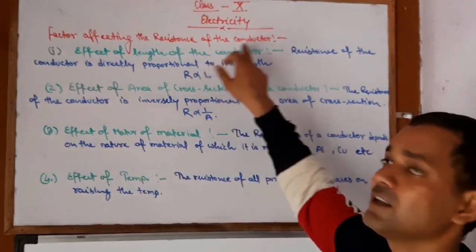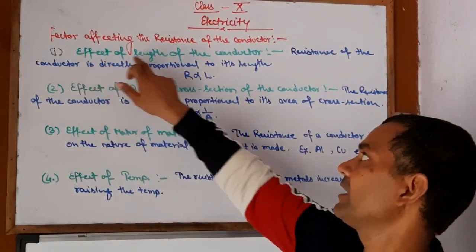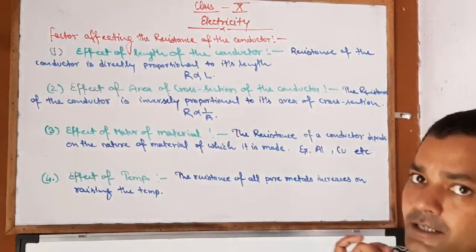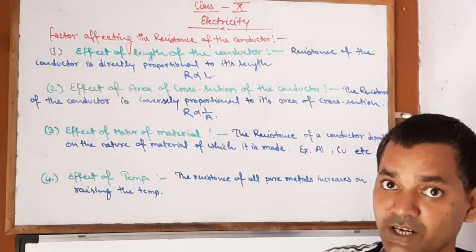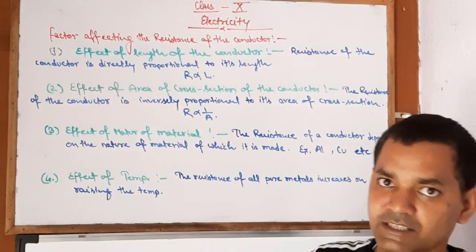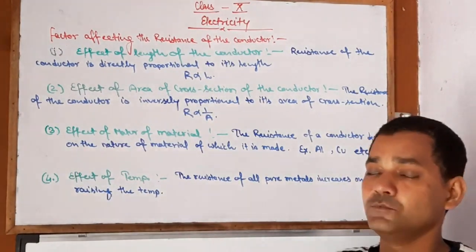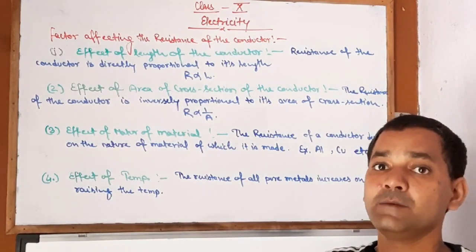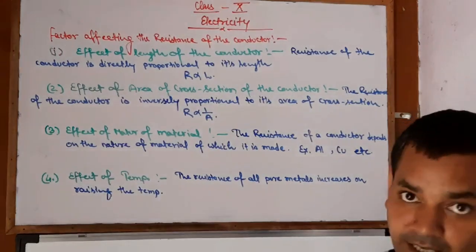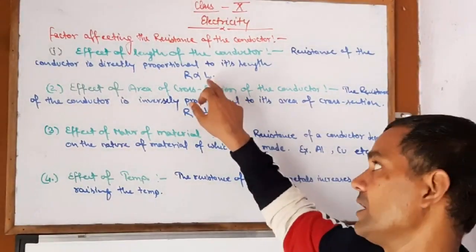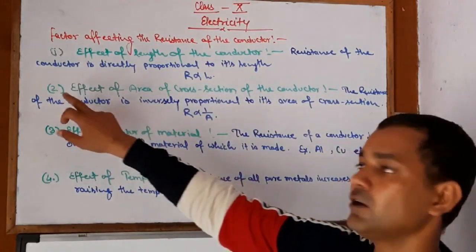Now the topic is factors affecting the resistance of the conductor. First, we discuss the effect of the length of the conductor. The resistance of the conductor is directly proportional to the length of the conductor — R ∝ L. As the length increases, resistance increases. If length is doubled, resistance doubles; if length is four times, resistance becomes four times.